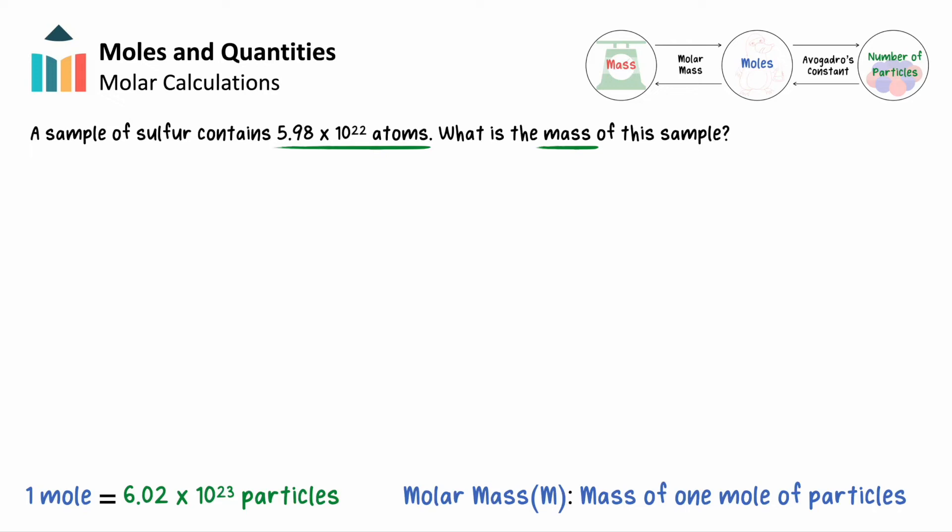For this calculation, we span between atoms and mass. This is a bit tougher to do, as we don't have a direct single conversion that will take us from atoms to grams. Instead, we must travel through moles, converting from atoms to moles, and then from moles to mass.